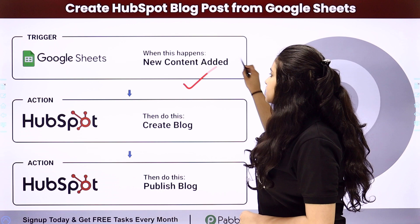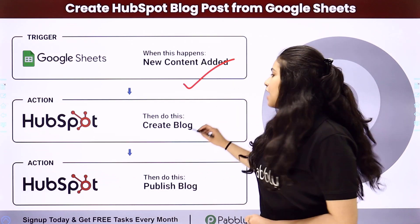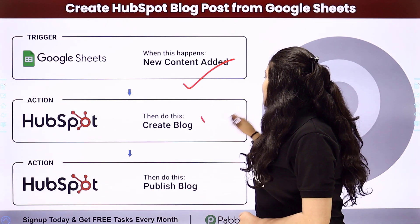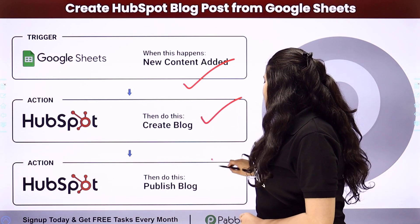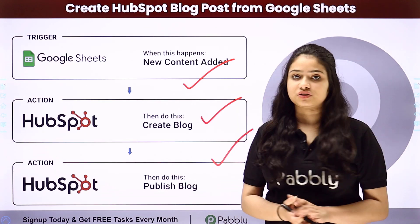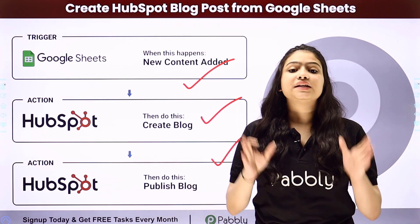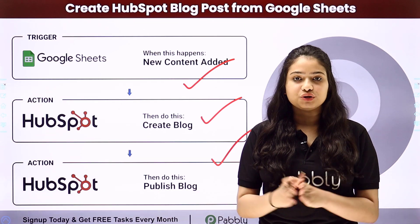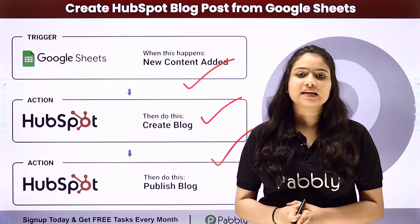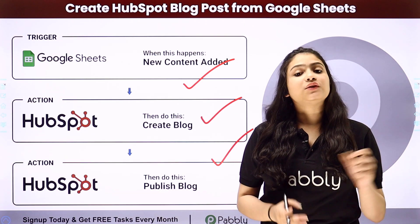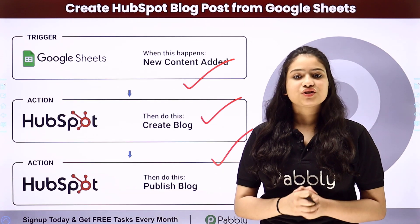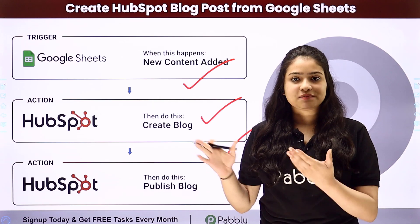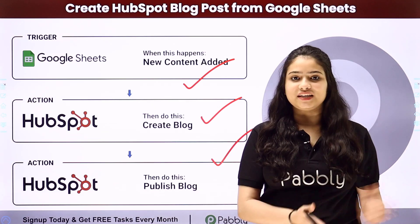We have Google Sheets in our trigger, and then we have HubSpot CRM in our action. We are going to connect all of them using Pably Connect in order to automate this entire process. To learn this automation step by step, let me take you to my screen.